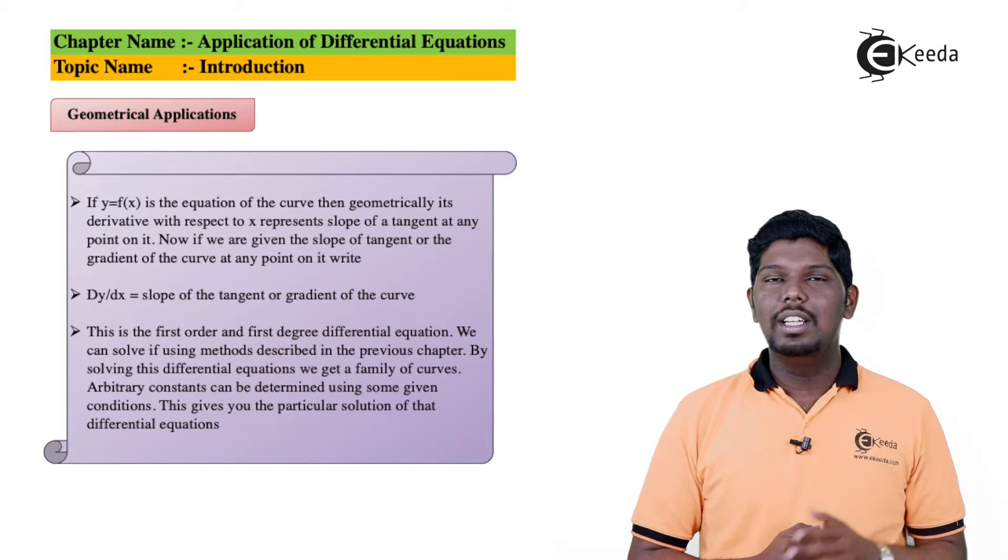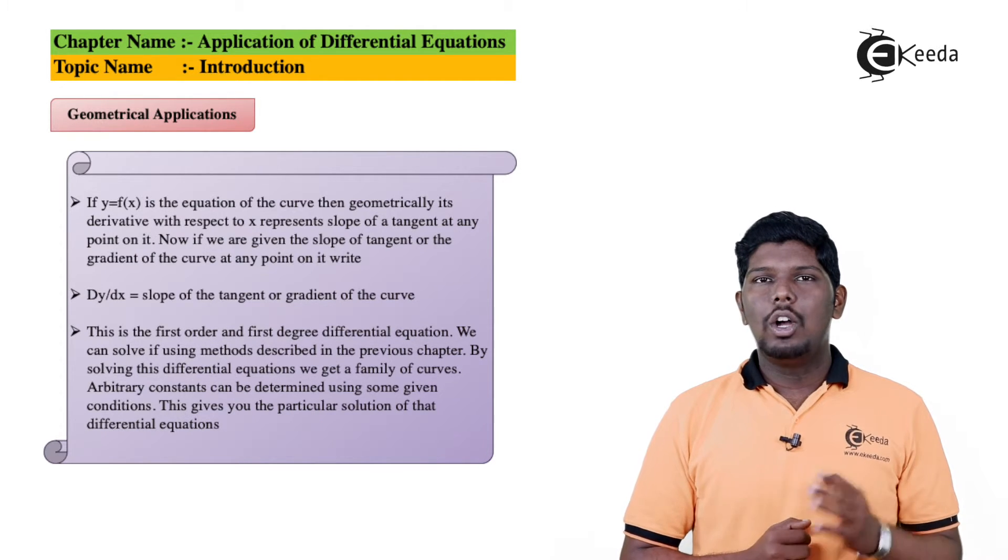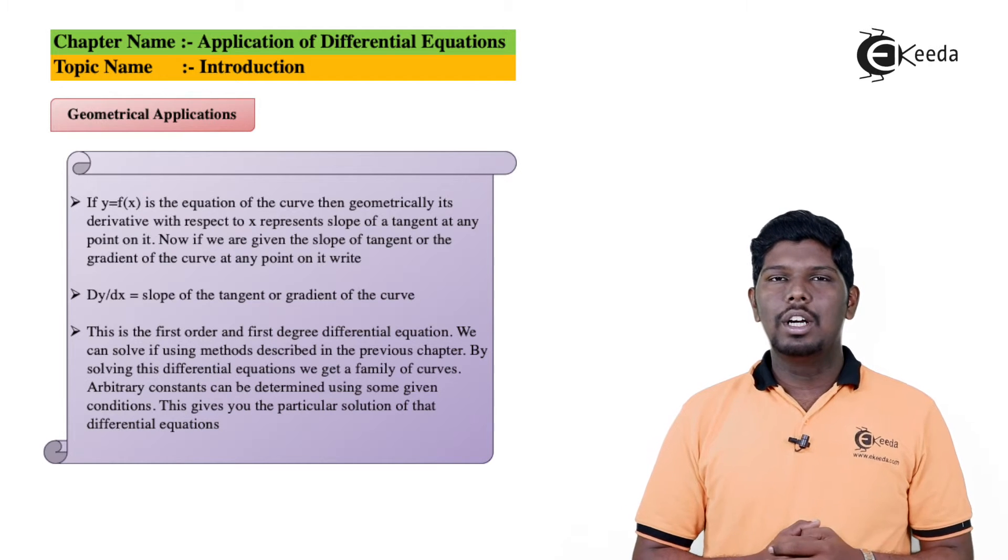And if we take its negative reciprocal, that value will be the slope of normal. Now just imagine if the slope of tangent or the slope of normal is given for a particular curve.